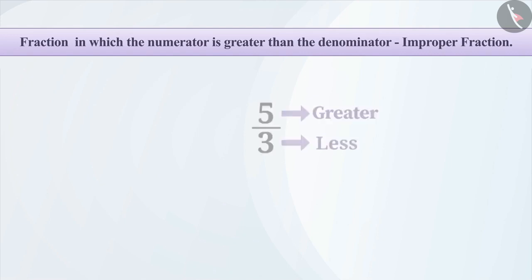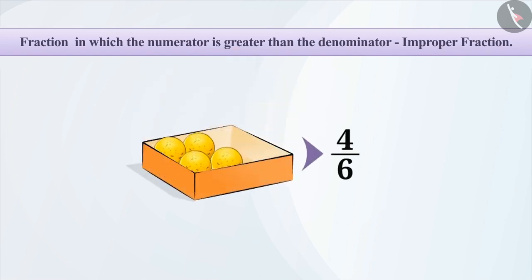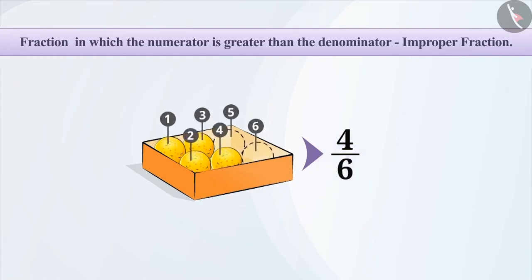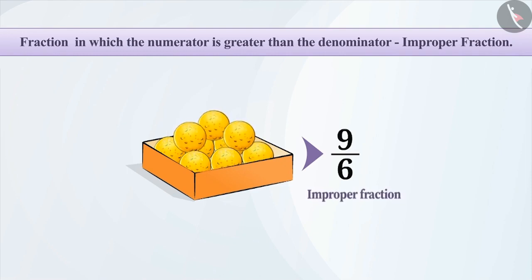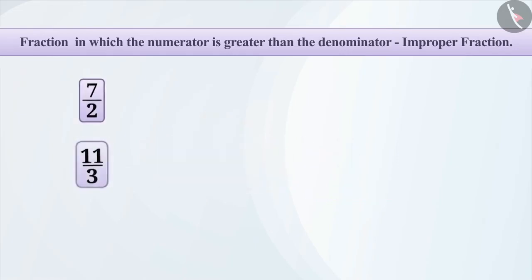If you consider a box and things in it as a fraction, then the denominator represents the number of things that can be placed inside the box, whereas the numerator represents the actual number of things in the box. An improper fraction means that the number of things in the box are more than its capacity — more than one box is required to place these things. Some other improper fractions are 7 by 2, 11 by 3, and 16 by 7.